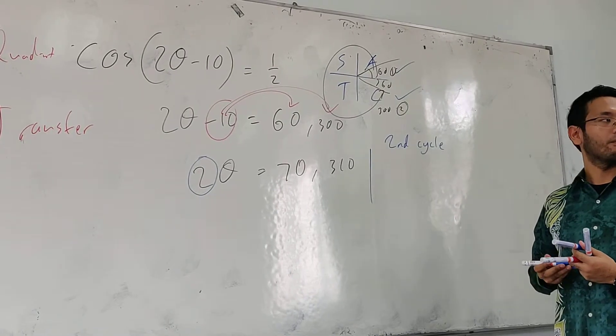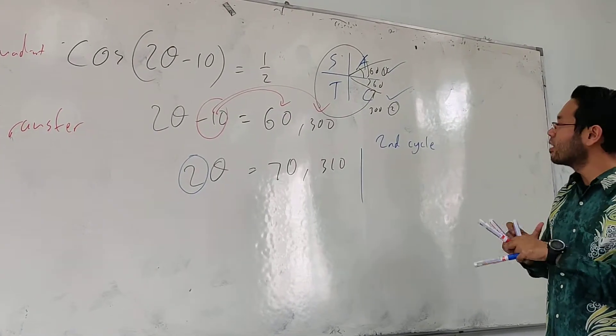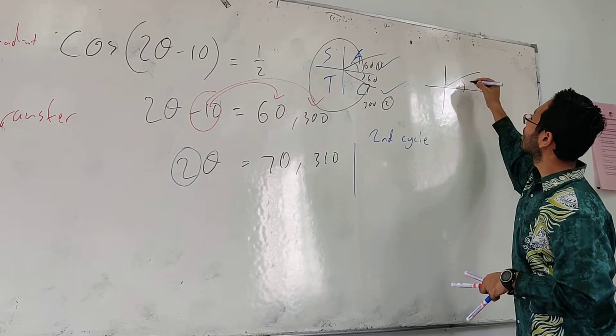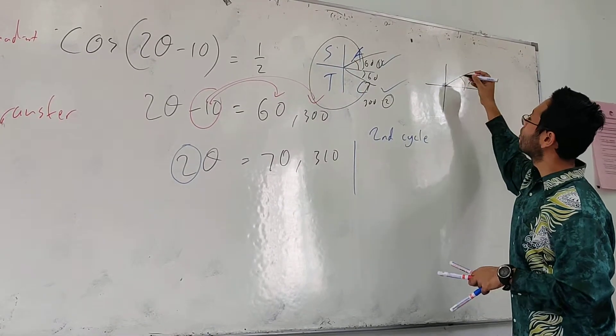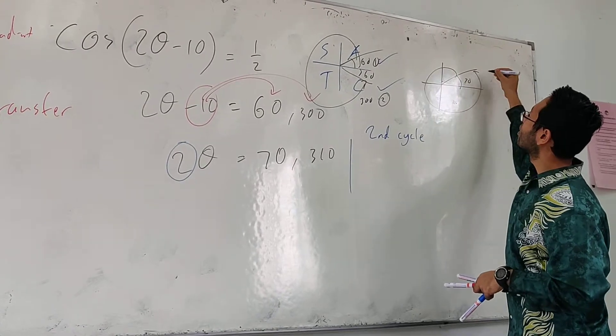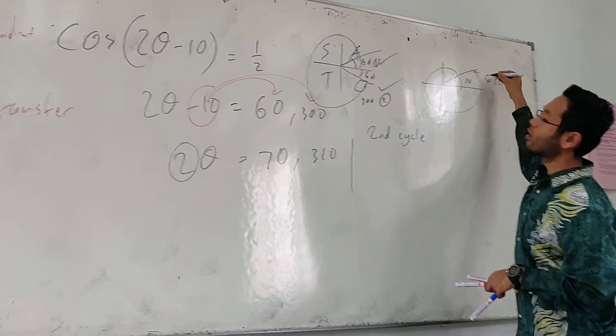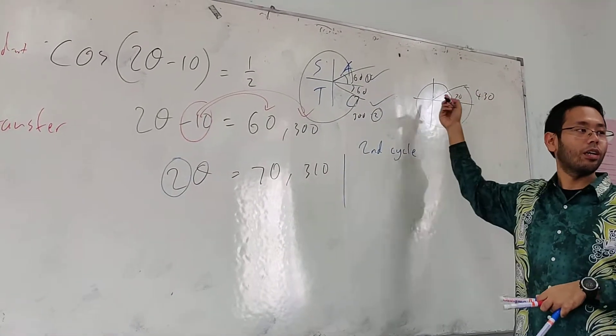Of the quadrant. Of the quadrant. Plus 360. What actually happen is, if here is 70. You can go one more round. Which is 430. So there are two answers.